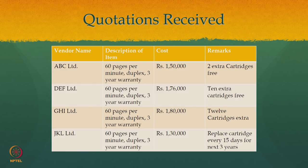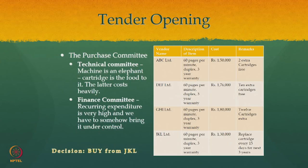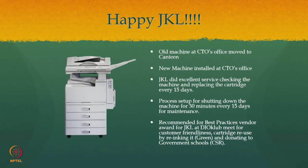Company ABC offered 2 extra cartridges, the second offered 10 free, the third offered 12 free. The fourth company, JKL, said they would not give extra free cartridges but would replace a cartridge every 15 days for the next 3 years free of cost. The purchase committee followed the process and the technical committee opined that the machine is a one-time purchase but the cartridge is recurring expenditure — like food for an elephant. So the obvious choice was JKL, who quoted the least at 1,30,000 for the photocopy machine with free cartridge replacement every 15 days for 3 years.